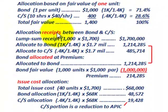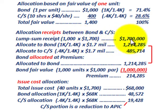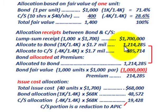Now we allocate the receipts between our bonds and common stock. The lump sum receipt: we sold 1,000 units at $1,700 per unit, for a total of $1,700,000. To allocate the bond, we use the fractional amount of 1 divided by 1.4, times the total receipts of $1.7 million. That gives us $1,214,285 allocated to the bonds.